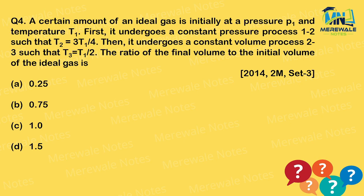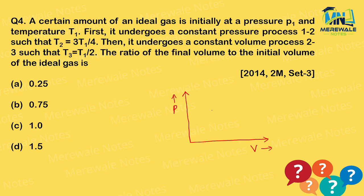Next question about an ideal gas: a certain amount of ideal gas is initially at pressure P1 and temperature T1. First, we draw a pressure-volume diagram to make the question easier to solve.